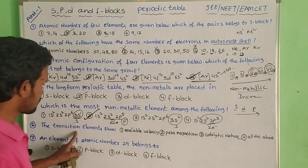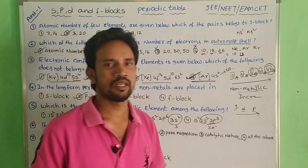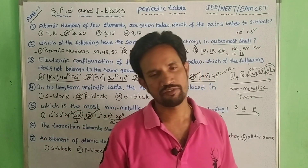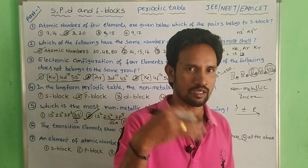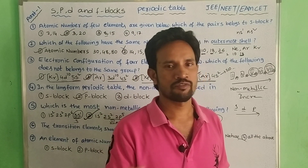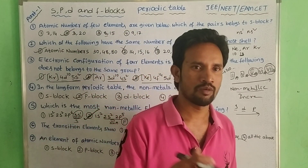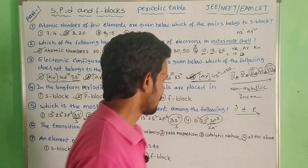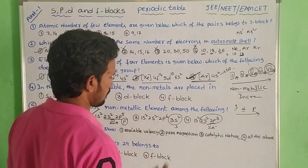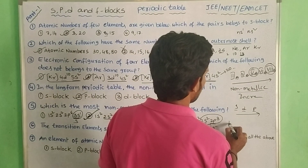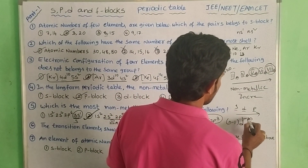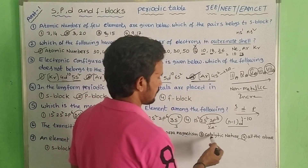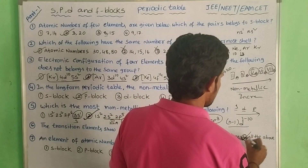The transition element shows different characteristic properties: variable oxidation states, catalytic properties, complex compound formation, alloy formation, hard and heavy nature, different colored ions, and paramagnetic character. The transition elements have configuration (n-1)d 1-10, ns 1-2. These are the key properties of D-block transition elements.